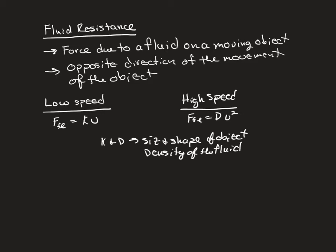So for each situation, that constant is going to be different, which is what makes it so complicated. You would have to figure out what k and d are for each individual problem. It's not like when I give you a coefficient of friction where I can say, okay, it's wood and it's steel. This is what the coefficient of friction is.